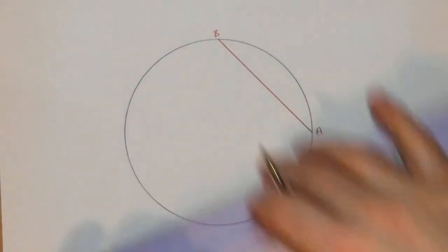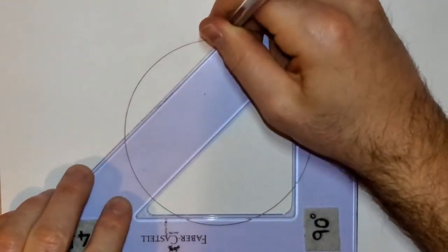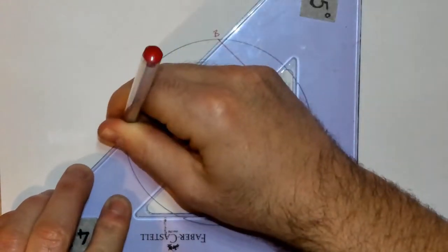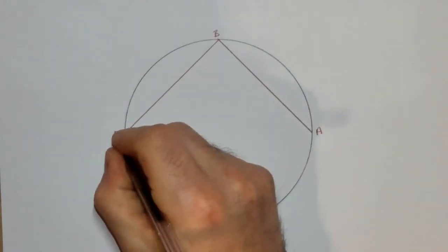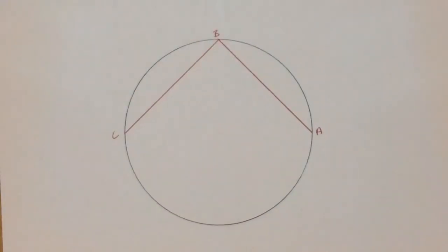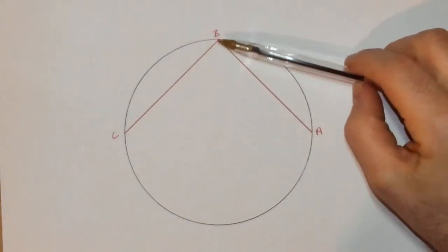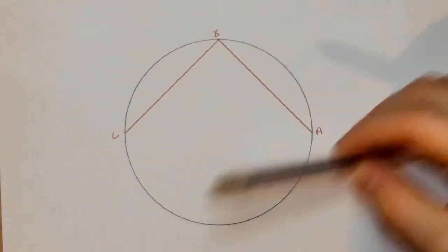Now I'm also going to create another chord, but going in an opposite direction. I'm actually going to use B as a starting point for this one. I'm going to call this one B, C. Now we know a chord is a line that goes from one point on the circumference to another, but it doesn't go through the center.